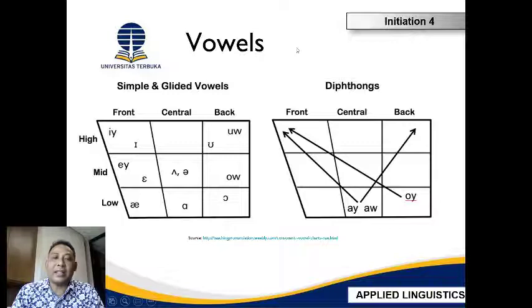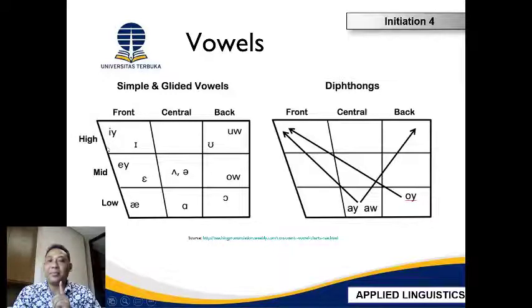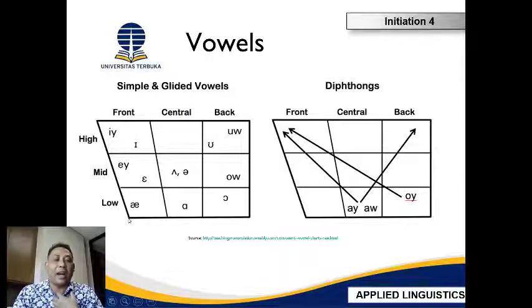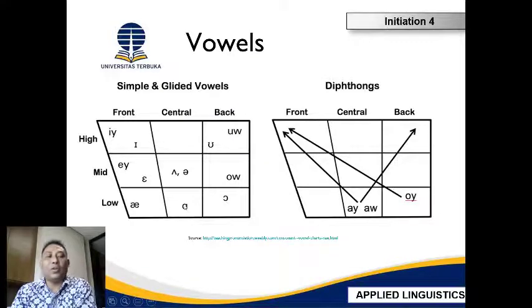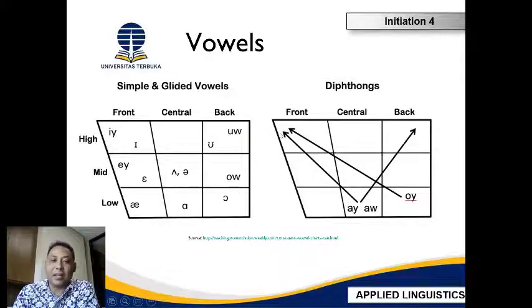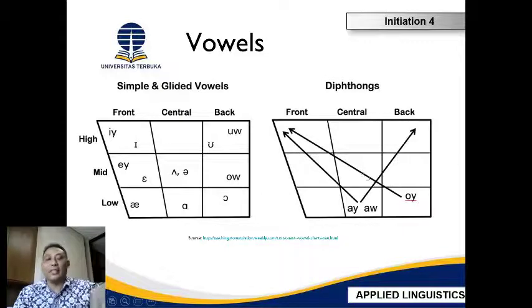Here is where vowels are being produced. We can see that from high — where the vowel /i/ is produced — to mid, like /e/, and lower, /æ/. There are also central vowels. And for diphthongs, there's a kind of movement — for example, /aɪ/ goes from central to front, /aʊ/ from central to back, and /ɔɪ/ from back to front. So there's a kind of movement for diphthongs.